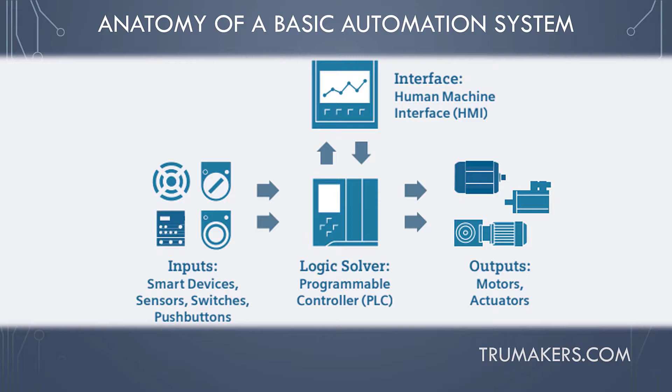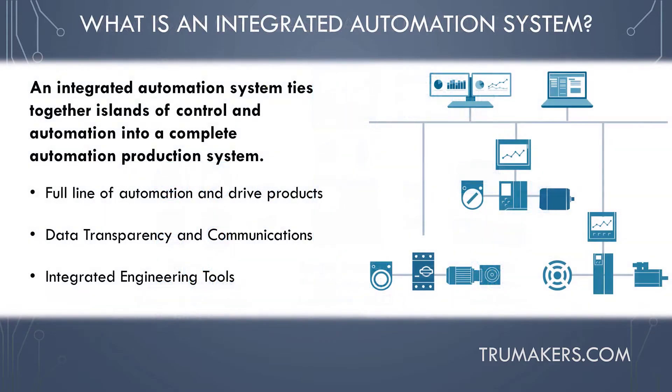The human machine interface provides the operator a portal for controlling the automation system and understanding whether it's running correctly. The human machine interface may include statistical data about the automation task and diagnostic information in the event an error is detected.